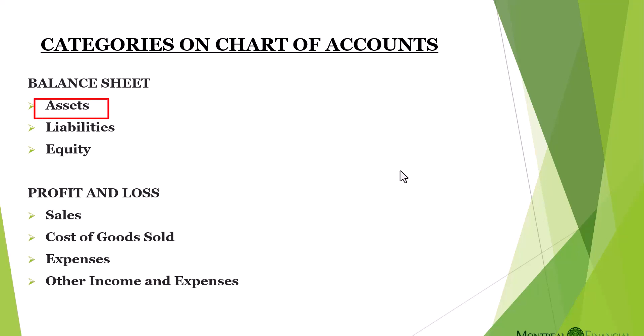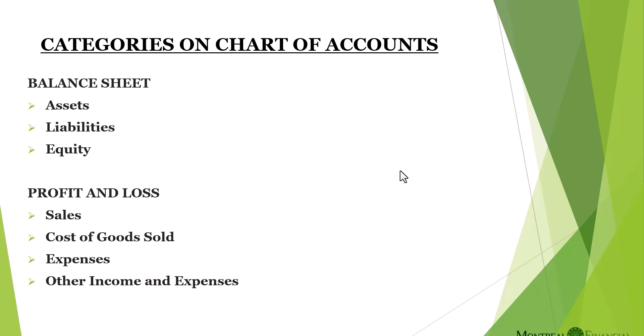Assets are items that you own. Liabilities are amounts that you owe to third parties. And equity represents your contributions to the business, as well as retained profit or loss from the inception of your business.